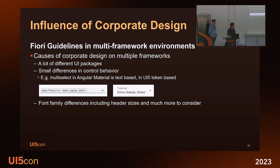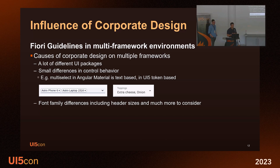Another big aspect is font family differences. UI5 comes with the 72 font, even with different weights, and Angular Material uses fonts from Google — and now you need to try to fit them. Both frameworks are optimized for these fonts. So you can change the font in the theme designer, but you'll have a wider word size and the applications may have issues you don't want.